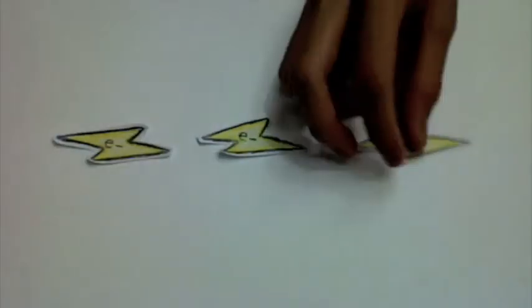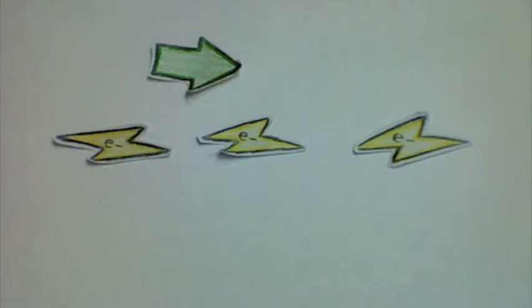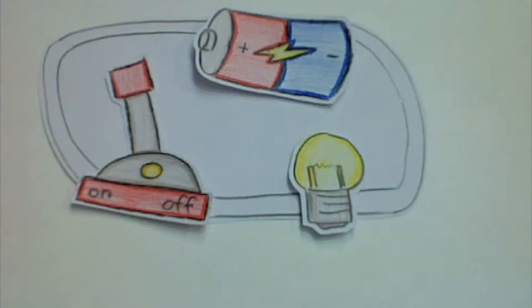Electric currents are the continuous flow of electric charges in a material. They are generated in a material where there is a potential difference, or voltage, such as this electric circuit.